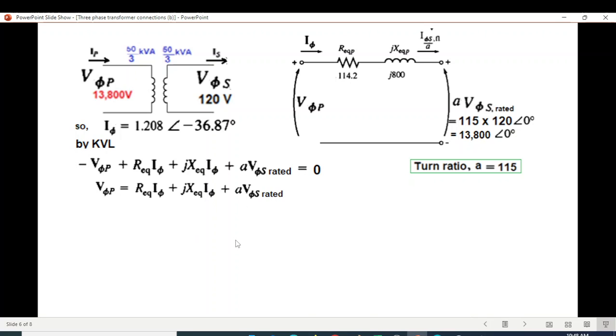Now we can calculate the value. R equivalent is 114.2, I value of I phase. Turn reactance multiplied by I phase and A Vs: 13,800 angle 0.